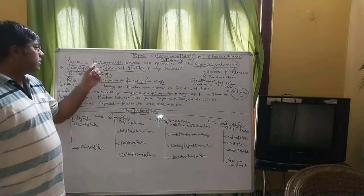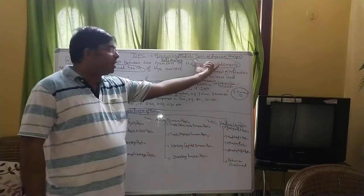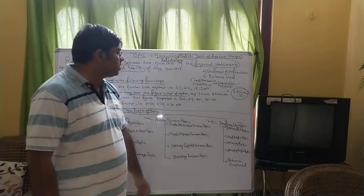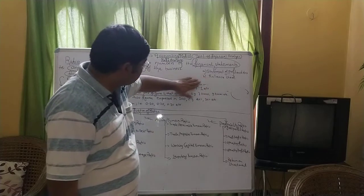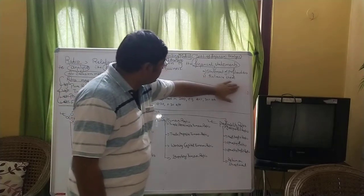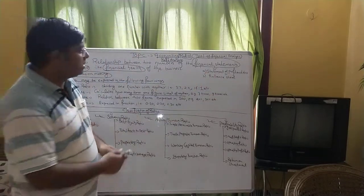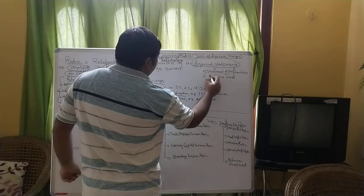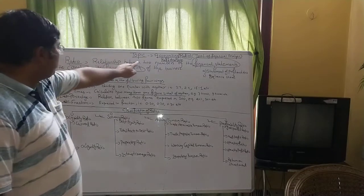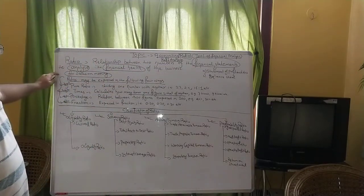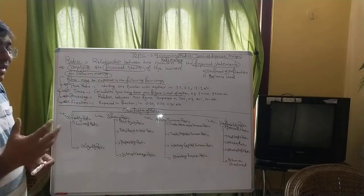A ratio is a relationship between two numbers of the financial statements. Under financial statements, we have two things: the statement of profit and loss and the balance sheet. In class 11 it was referred to as profit and loss account and balance sheet, and in class 12 we have already done the statement of P&L. So, ratio is a relationship between two numbers of the financial statements to analyze the financial health of the business.